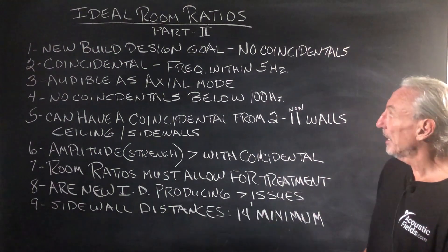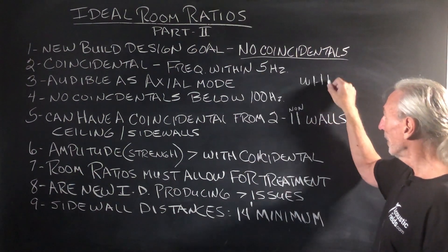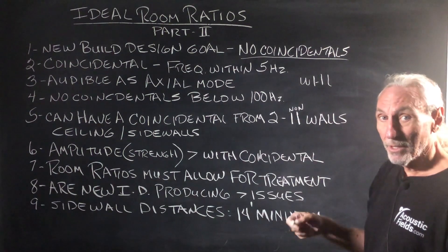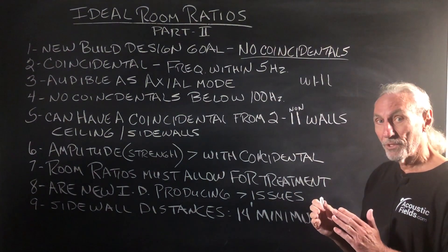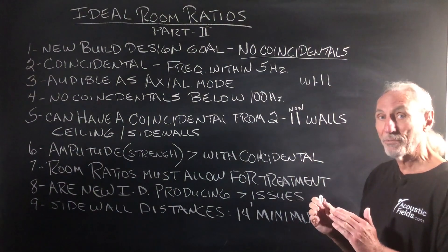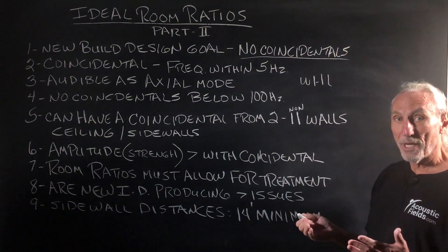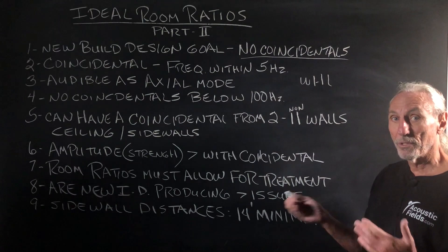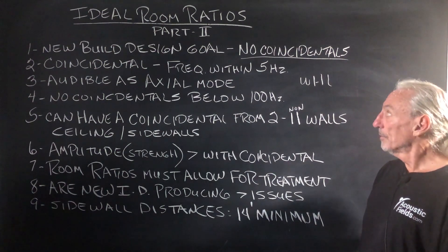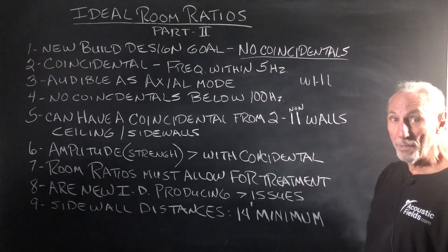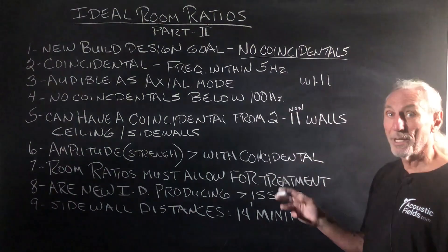What we find in our new build designs, the first thing we look for when we're doing width, height, and length ratios is no coincidentals. Coincidental is where the frequencies of issue — the axial, tangential, and oblique modes — are within five cycles or five hertz of each other. That creates a situation where you can have exaggeration or attenuation, or both. So when you're doing a new build, you want to select the right ratios. No coincidentals — that's our goal.